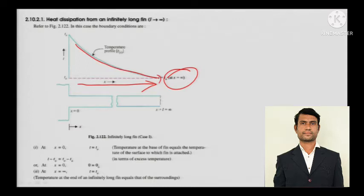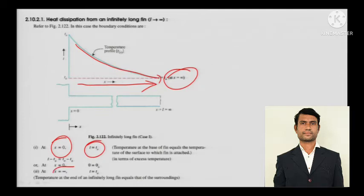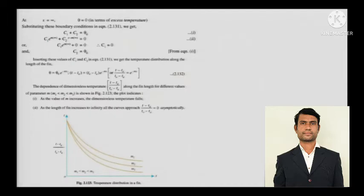The temperature does not go to zero — it reaches the ambient temperature. Nothing can come below ambient temperature without refrigeration or air conditioning techniques, which we are not discussing here. So the boundary conditions are: at X = 0, T = T₀, and at X = infinity, T = T_A (ambient temperature).